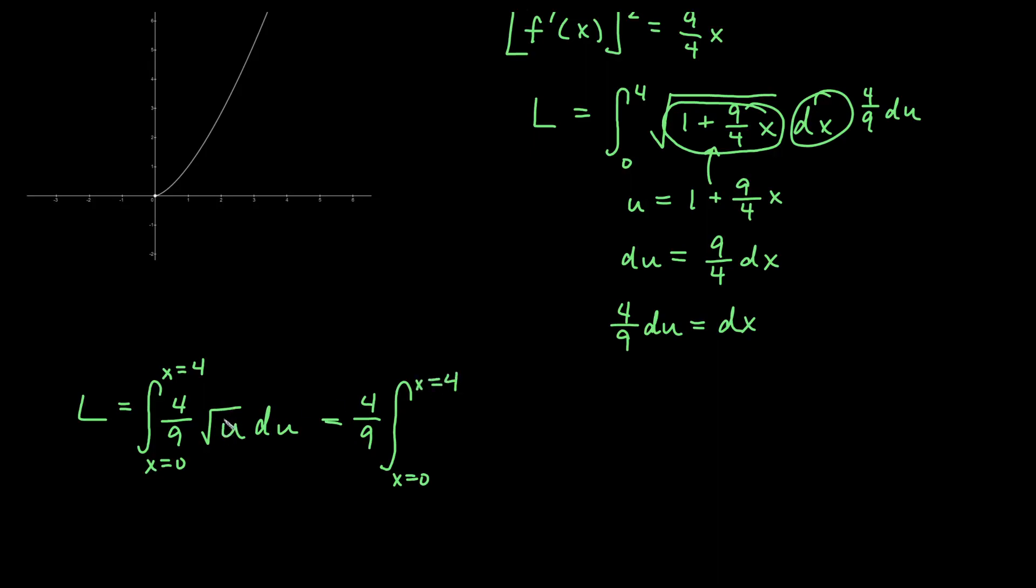We can obviously bump the constant multiple out. So we can think 4 ninths times our integral from 0 to 4. And then if you want to think of this as a power rule, u to the one half. So now I can do this as a power. I keep my four ninths multiple. And if I'm integrating this, then my power will go up by one. So if I add one to a half, that will be three halves. I will divide by the new power. We won't leave it like that for sure. So divide by that new power from x equals 0 to x equals 4.